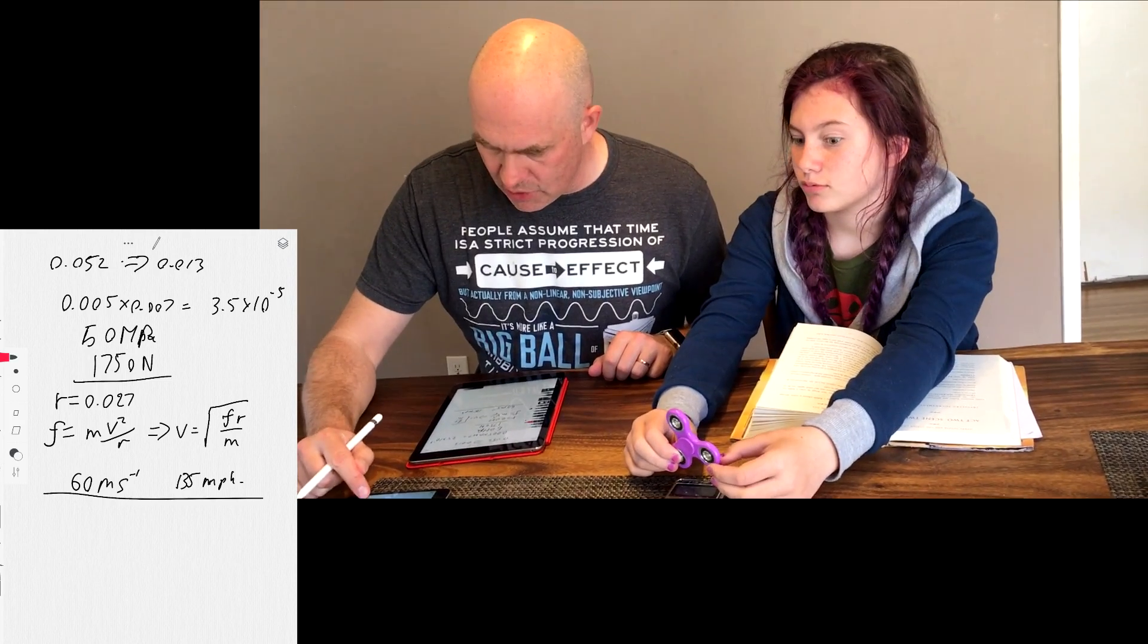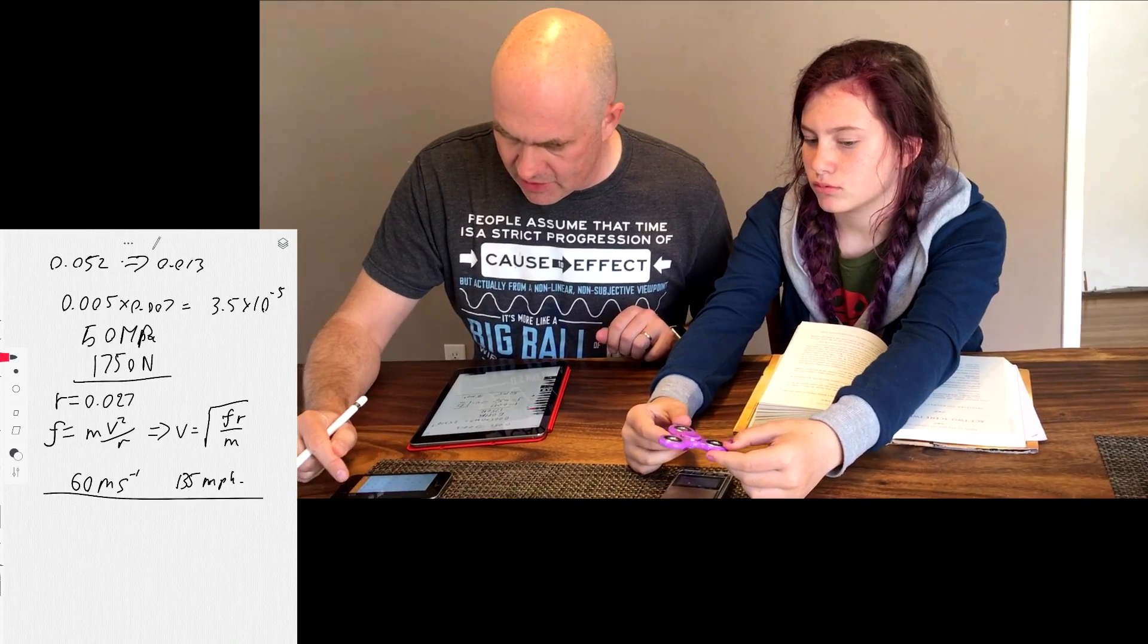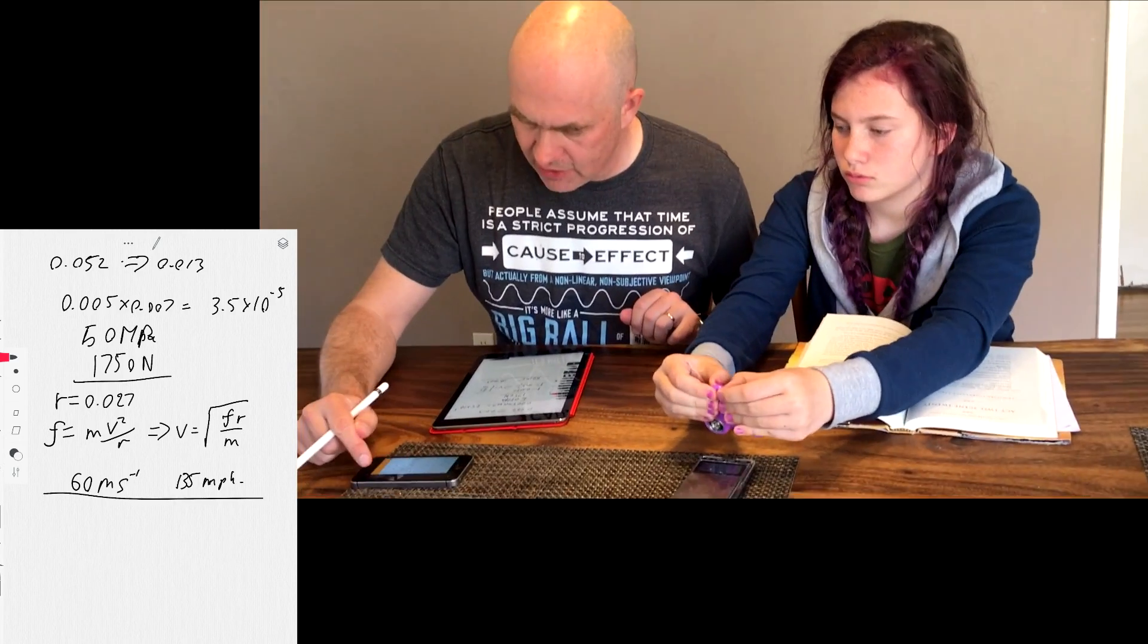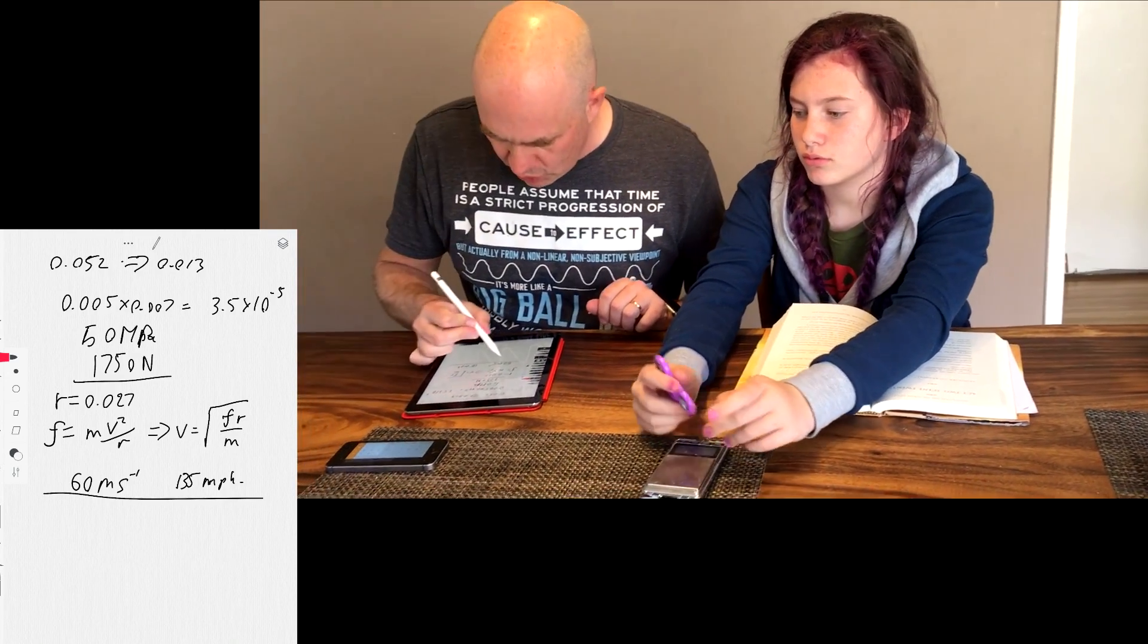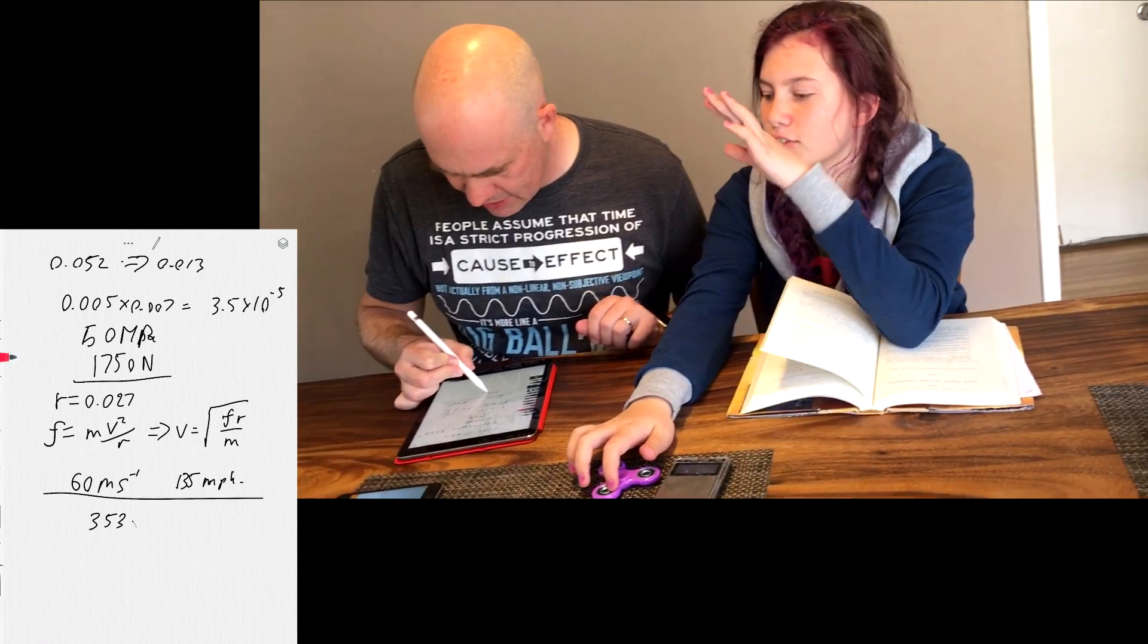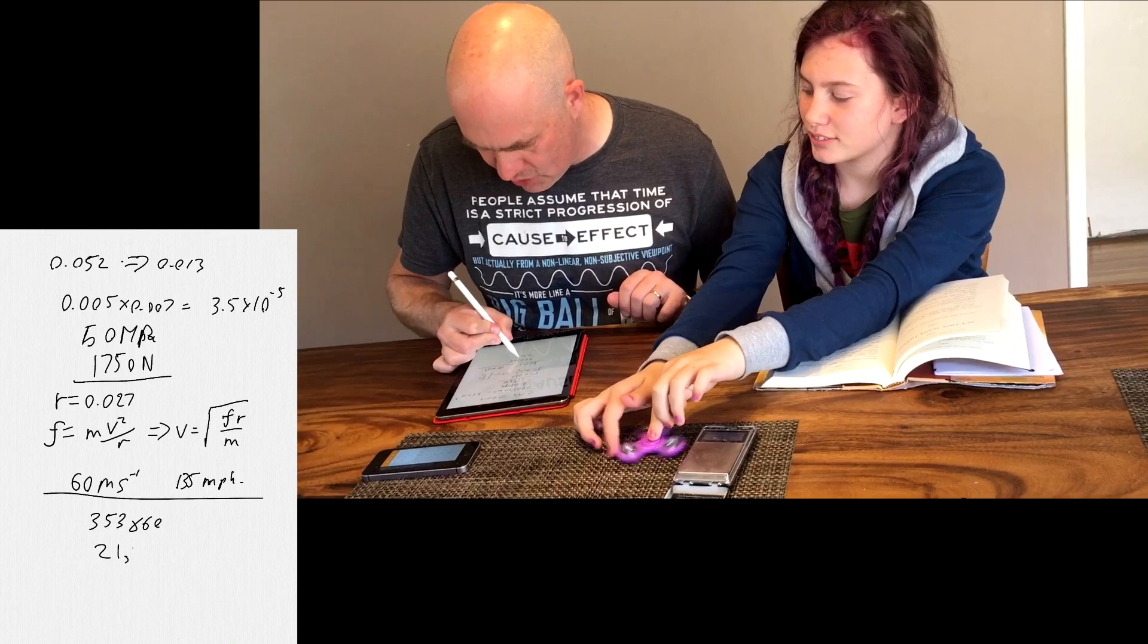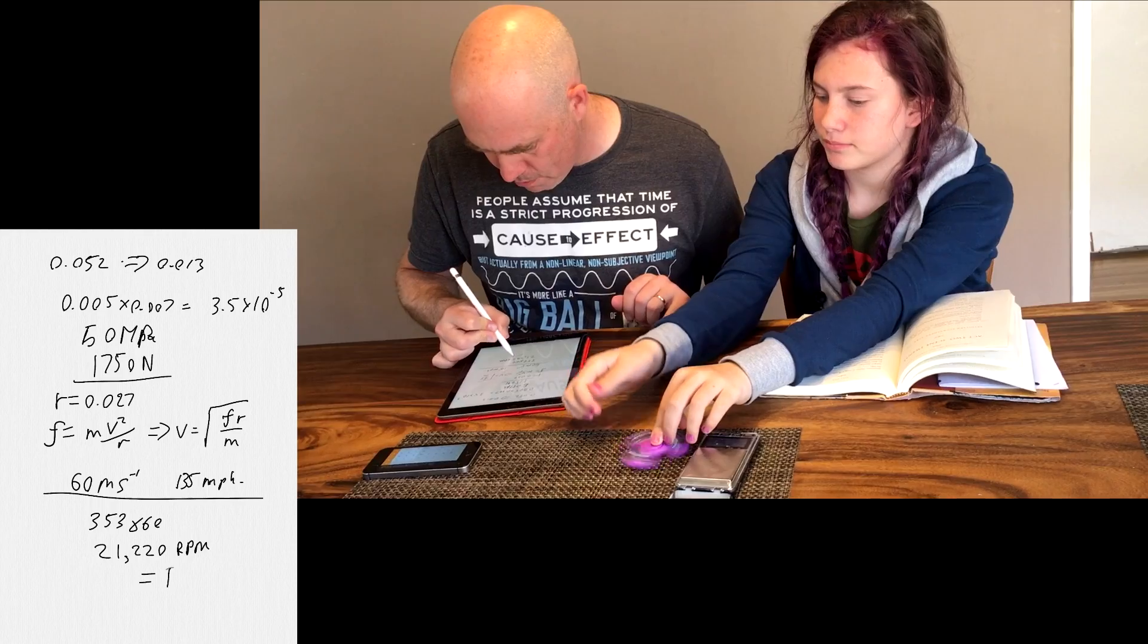How many RPM is that? Well, 60 meters per second, we're going all the way around. So we divide the speed, 60, by the circumference. So we divide it by 0.027, divide by 2, divide by pi, and we get 353 rotations per second times 60. That's 21,220 RPM equals boom, or RUD.